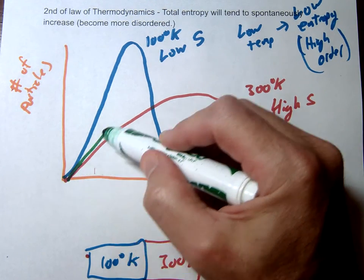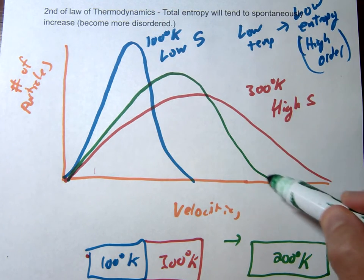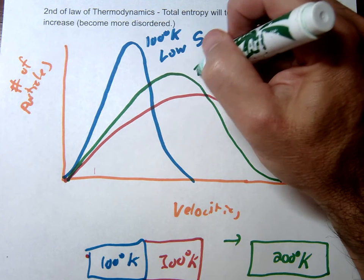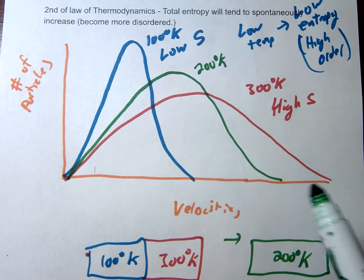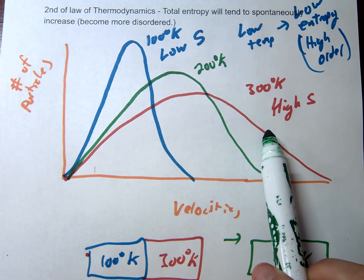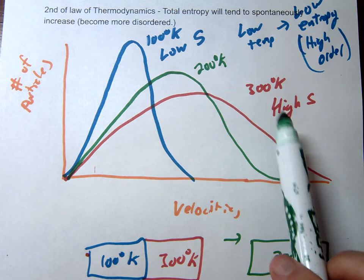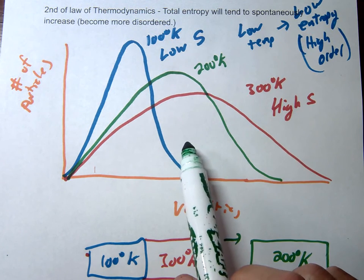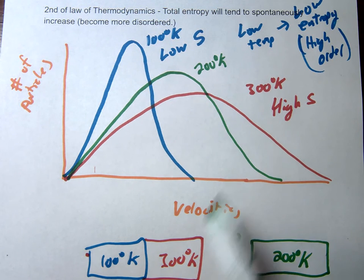So if we drew this one, this medium temperature, it might look something like this. This might be our 200 degree state of equilibrium that we reached. So I do want you to notice that the high temperature actually became more ordered. So in this case, entropy actually decreased for the red, for the high temperature.